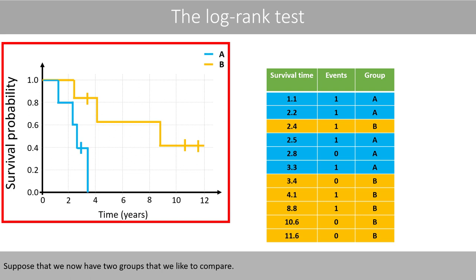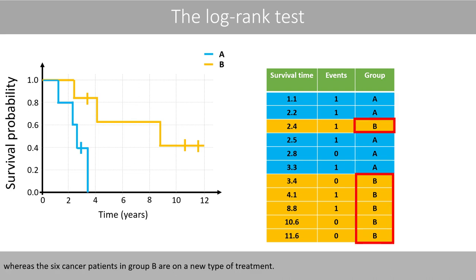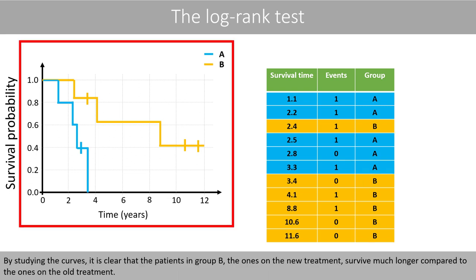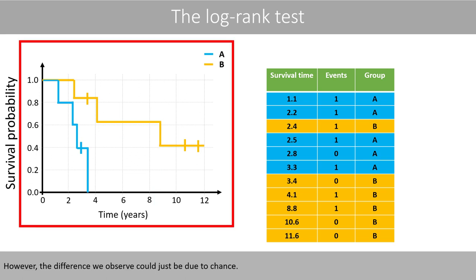Suppose that we now have two groups that we like to compare. For example, the 5 individuals in group A could represent a group of cancer patients that are on a traditional treatment, whereas the 6 cancer patients in group B are on a new type of treatment. By studying the curves, it is clear that the patients in group B, the ones on the new treatment, survive much longer compared to the ones on the old treatment. The median survival time in group A is only 2.5 years, whereas the median survival time in group B is 8.8 years. However, the difference we observe could just be due to chance. To determine if there is a significant difference in survival between the two groups, we can use a log rank test.